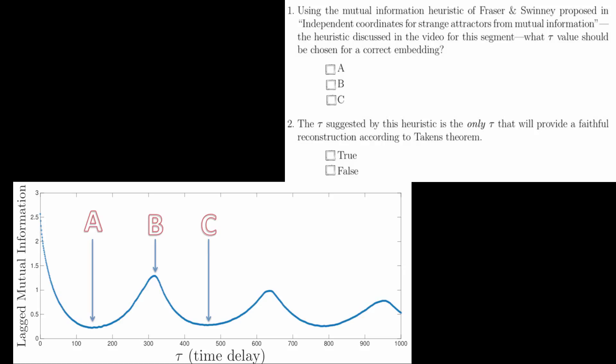The first question is about the heuristic we learned about in the lecture, and it wants to know whether A, B, or C is the correct selection of tau based on Frazier and Sweeney's heuristic. And that's A. You should select the first minimum of the mutual information according to Frazier and Sweeney.